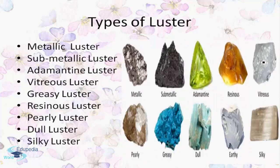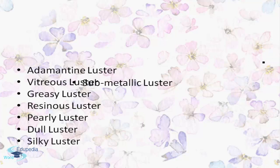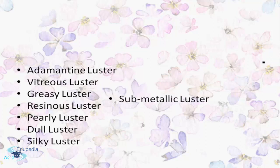Now let's understand the types of luster. Metallic luster is for elements that are opaque and reflective, with the look of polished metal — common examples are pyrites and gold nuggets. Sub-metallic luster refers to elements that resemble a metal but have become less reflective and dull due to weathering and corrosion. Examples of sub-metallic luster are cinnabar and sphalerite.